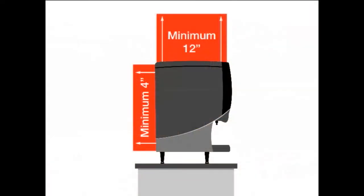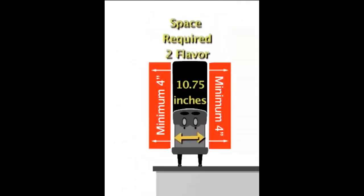With the legs installed, locate the unit allowing for 4 inches of clearance in the back and 12 inches of clearance on top, along with 4 inches of clearance for each side of the unit. The counter must be able to support 185 pounds.